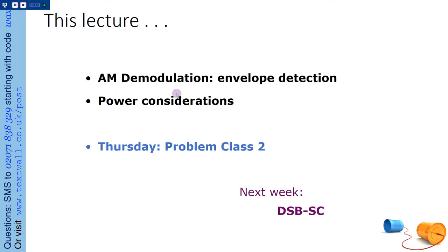So today we'll look at demodulation. We'll look at a particular type of demodulator called an envelope detector. It's a really simple kind of detector. Sometimes it's called a diode detector. And we'll spend some time talking about power considerations. On Thursday, there'll be a problem class. That'll be our second problem class. And next week, we'll start talking about DSP.